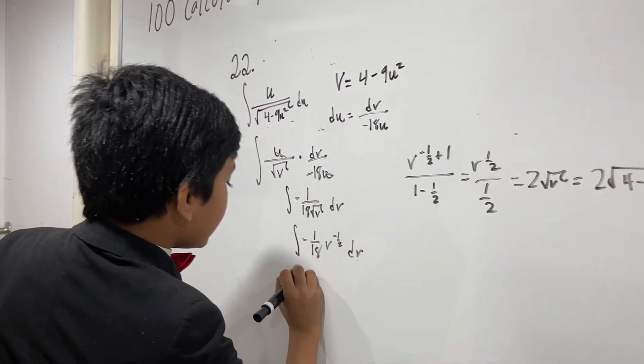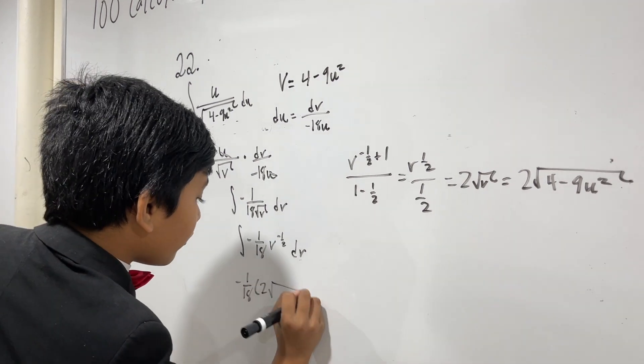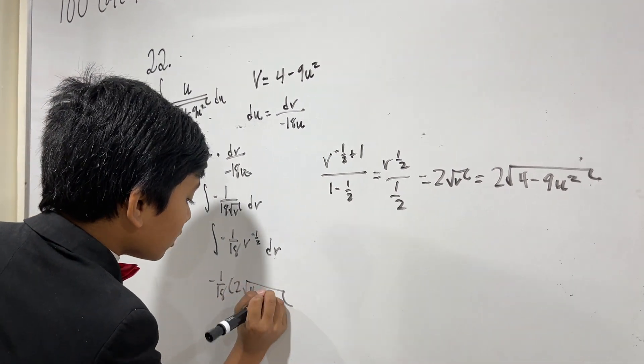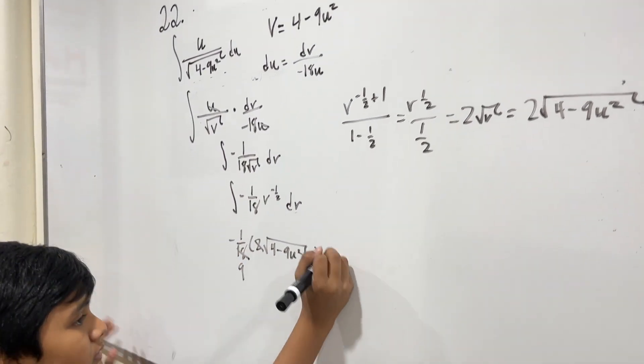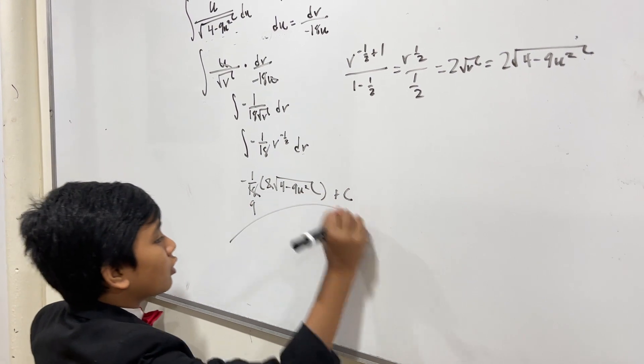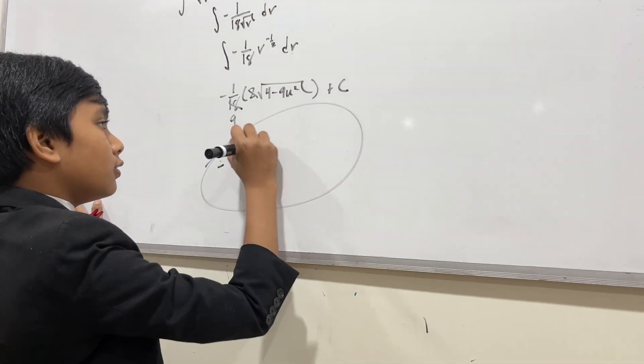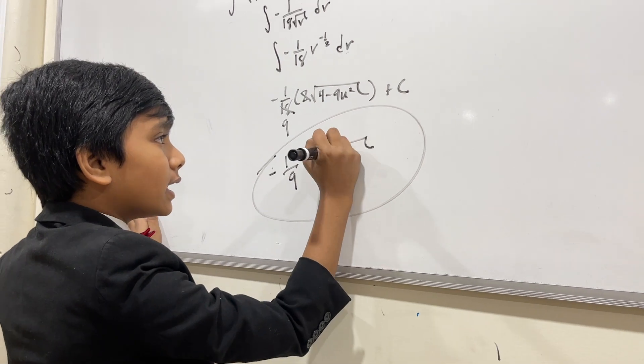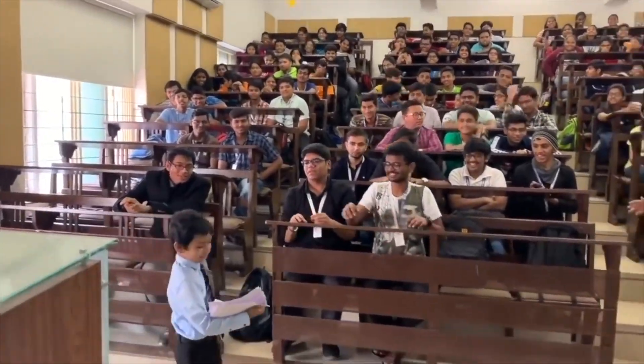So, we have minus 1 over 18 times 2 root 4 minus 9u squared, and we can reduce. So, this gives us, in total, minus 1 over 9 root 4 minus 9u squared plus...